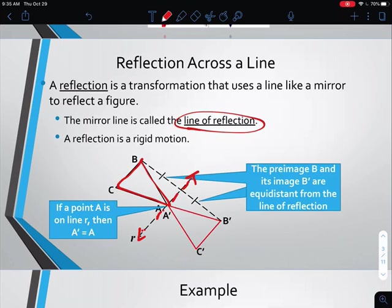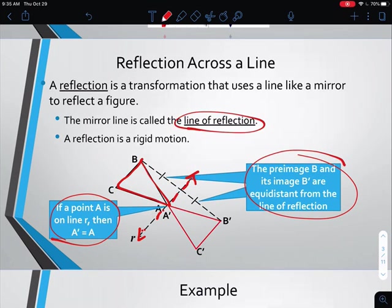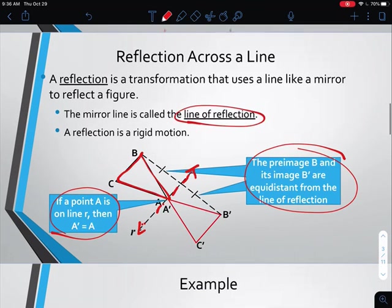When we reflect, it's like a mirror image, and we use prime notation to denote the image: A prime, B prime, and C prime. A couple of things to note: if a point lies on the line we want to reflect across, that point is not going to move — it stays right where it is, so A and A prime are the same point. Also importantly, the distance from each point to the line of reflection should be identical. So B to the line should be the same distance as B prime to the line, which means we can just count how far away we are on one side and go that same distance on the other.